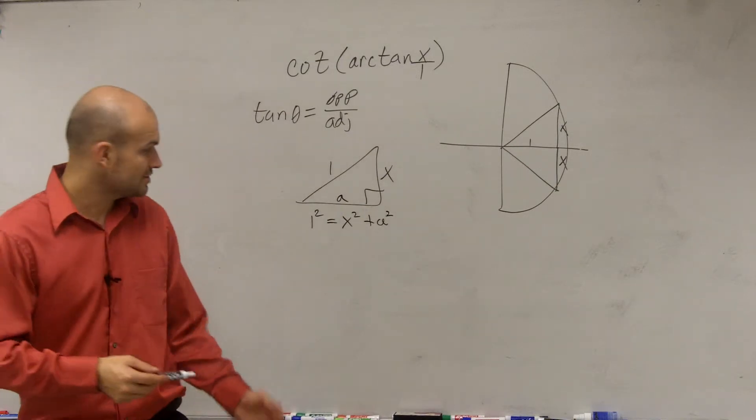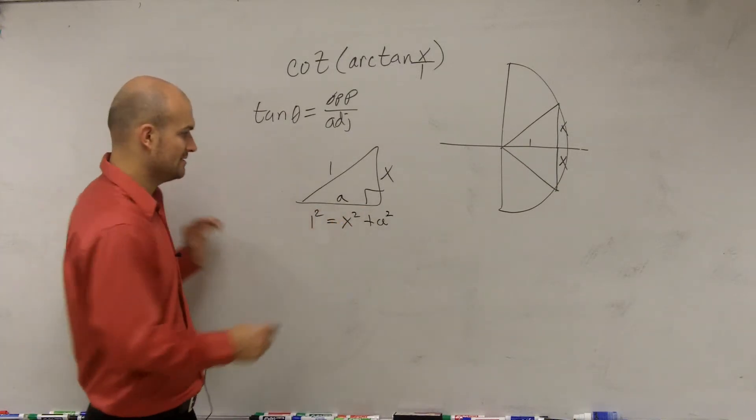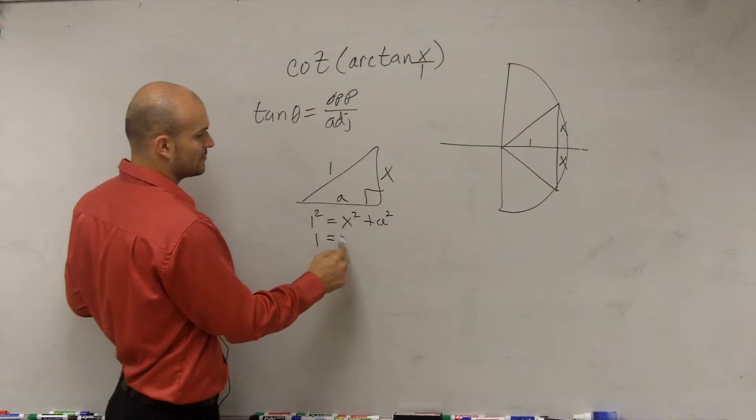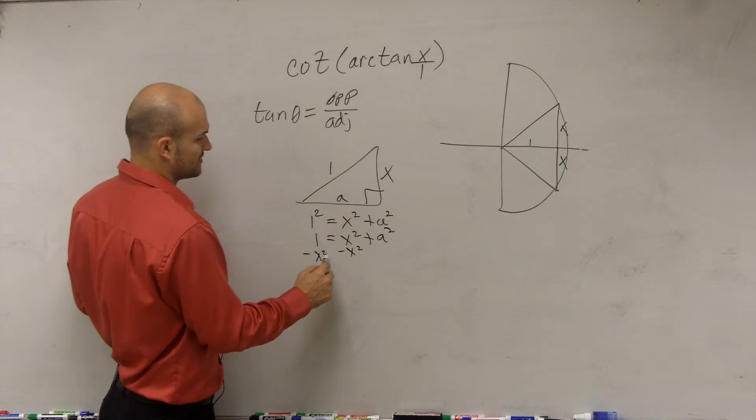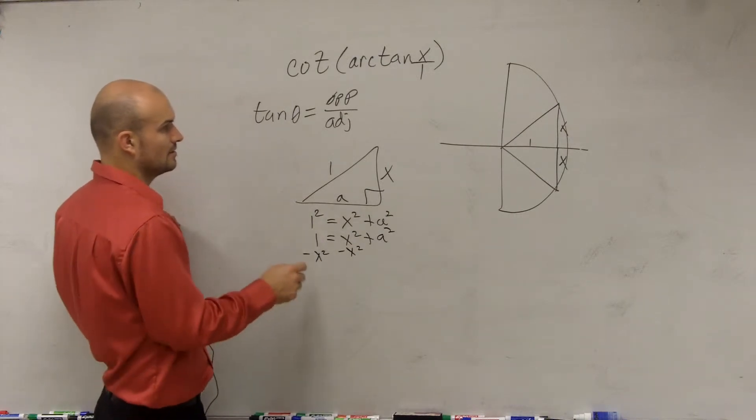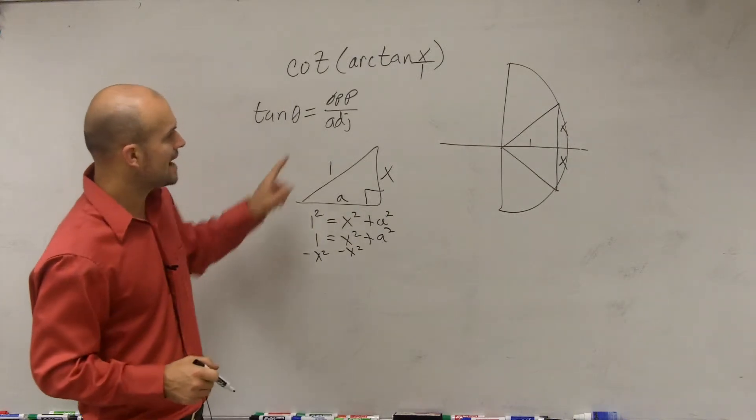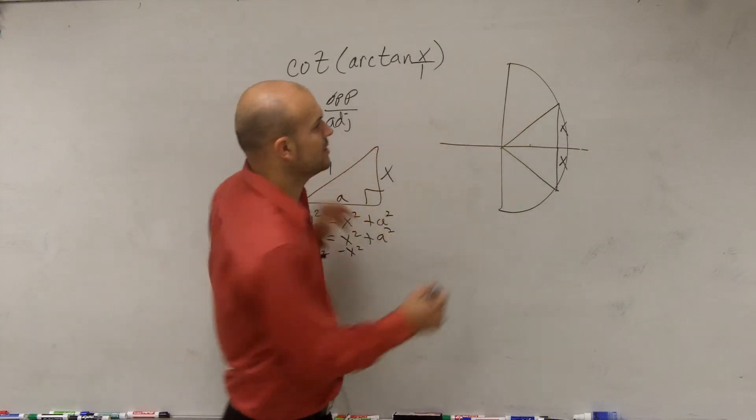And guys, all you're going to do is solve for a. So therefore, you have 1 equals x squared plus a squared. Subtract the x squared, right? I'm sorry. Opposite over adjacent, we don't know. We know this is 1. We don't know what the hypotenuse is, right? My bad.